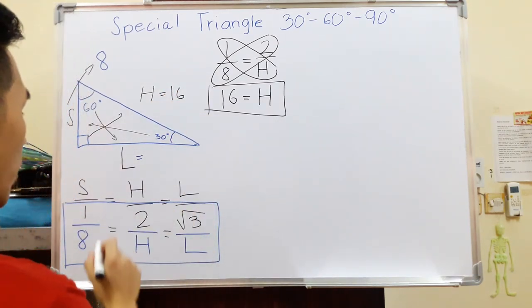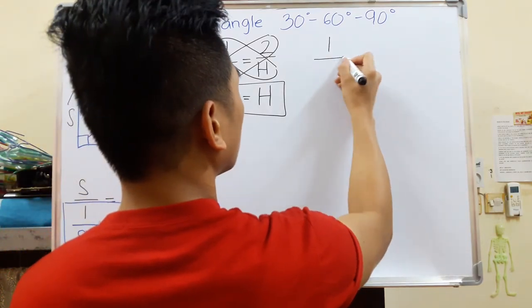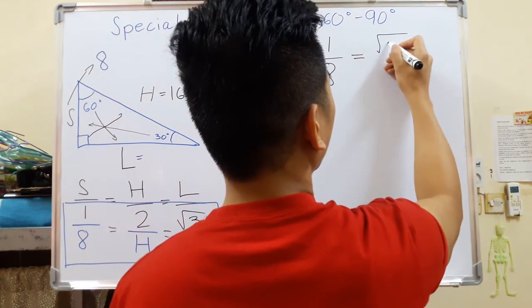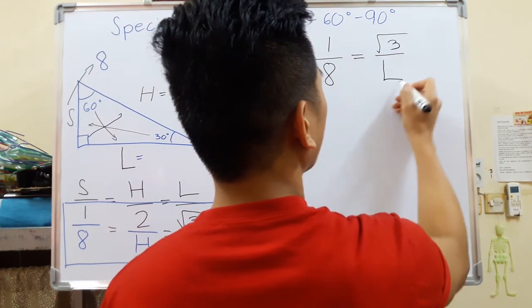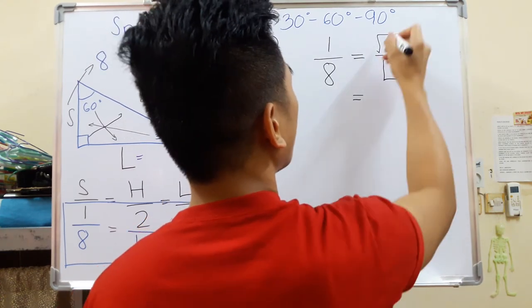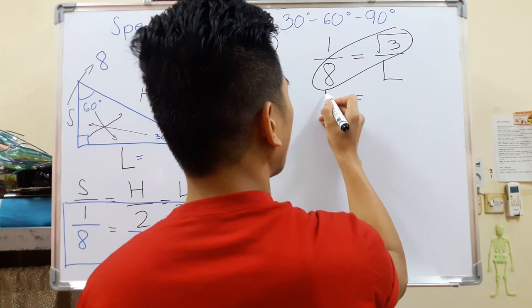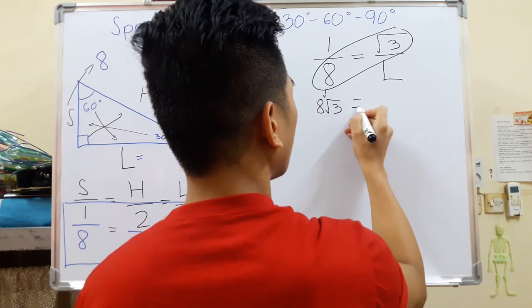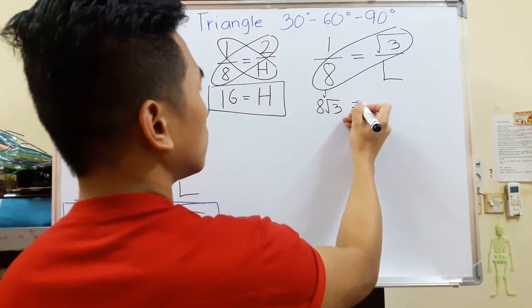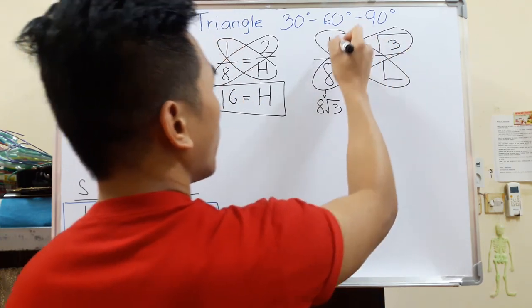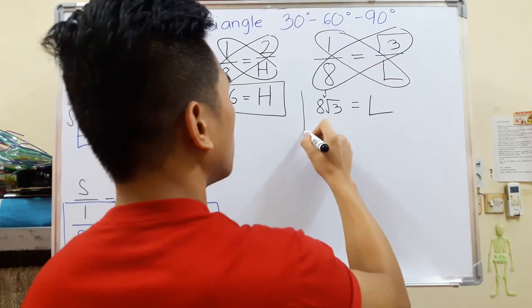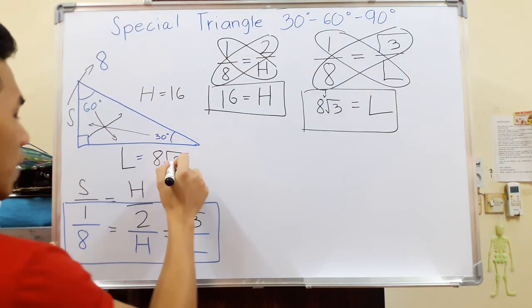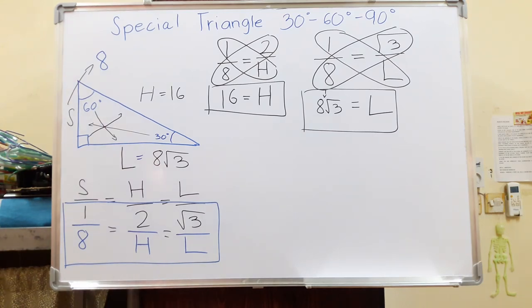Now let's find the longer side. We have 1 over 8 equals square root of 3 over L. Cross-multiplying: 8 times root 3 equals 8 root 3, and L times 1 equals L. So the longer side is 8 root 3. And there we go — that's how you solve a special 30-60-90 degree triangle without using your calculator.